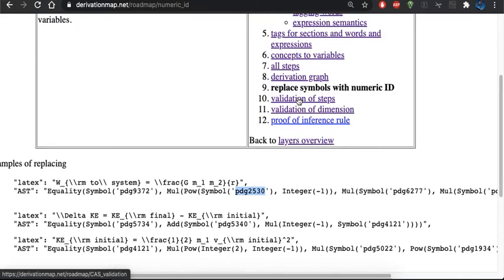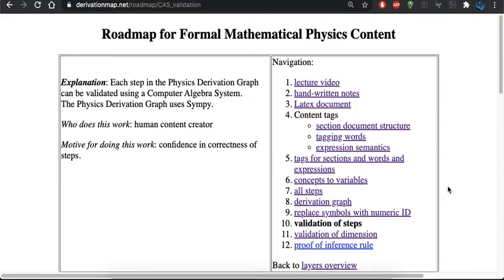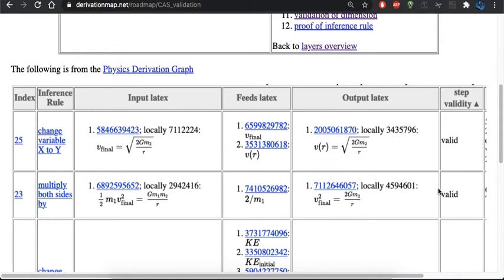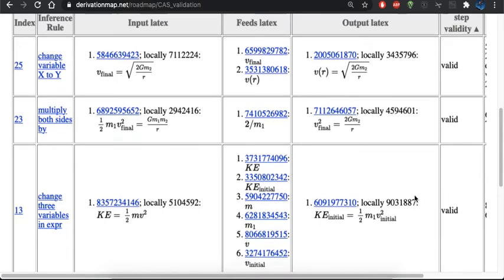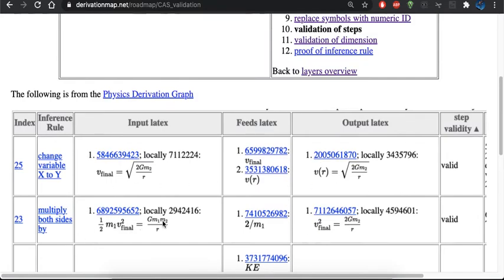Now why you might want to do that extra work of getting it into a computer algebra system representation is that you can actually check the correctness of the steps. Where before we had just LaTeX expressions, by switching those out into SymPy you could actually say I want to make this change of variable and the computer algebra system can be used to validate that what you've claimed to have done was actually carried out. So we can do that for various steps. Here we're multiplying both sides of this expression by 2 over m1, and the result that we get back as validated by this computer algebra system says yes, you did that correctly. So that's the value of converting it into a computer algebra system.